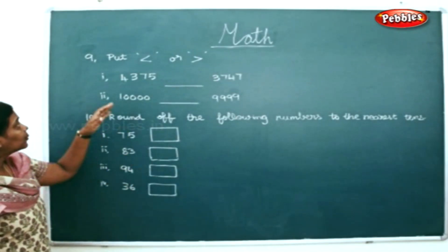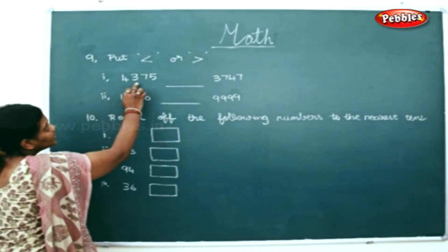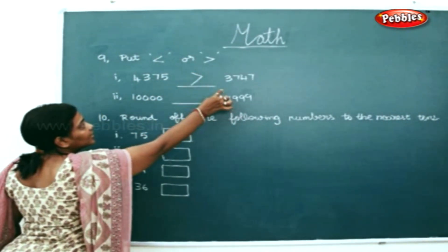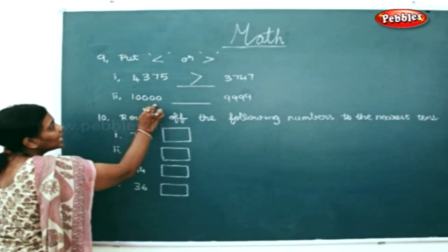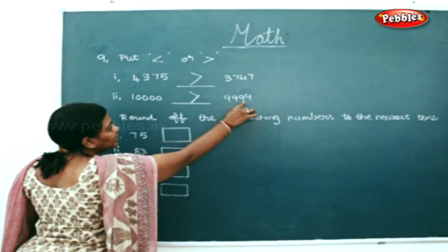Now we will put greater or smaller sign. 4375 is greater than 3747. The same way, 10,000 is greater than 9999.